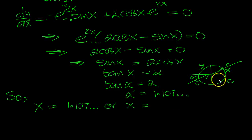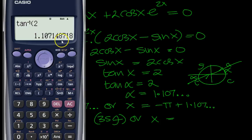Or x is equal to minus pi plus, which is from minus pi to pi, isn't it? 1.107 dot dot dot. So x is equal to 3 significant figures, this would be 1.11. So it's this minus pi, minus 2.03, 2.03 significant figures.